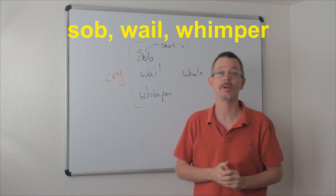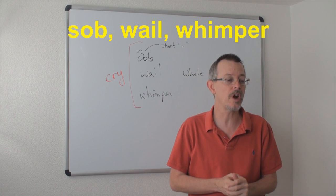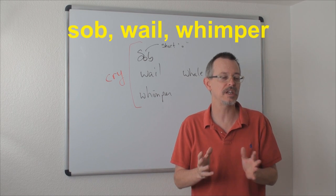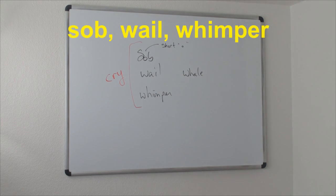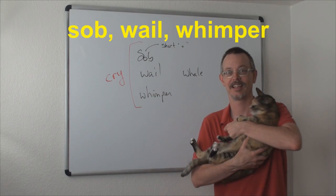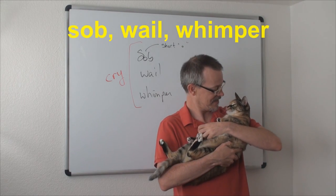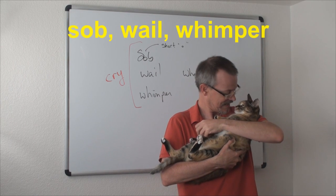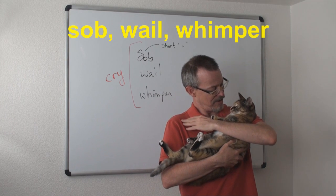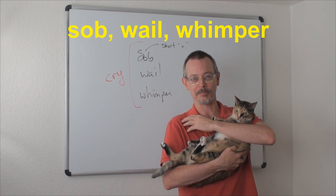And then there's whimper. Whimper is crying, but usually you can imagine an animal. Let me see if I can get my cat here. And let me see if I can get her to whimper. Yeah, there you go. Do you like being horrid, Ed? What's wrong? She was playing. She wants to play.